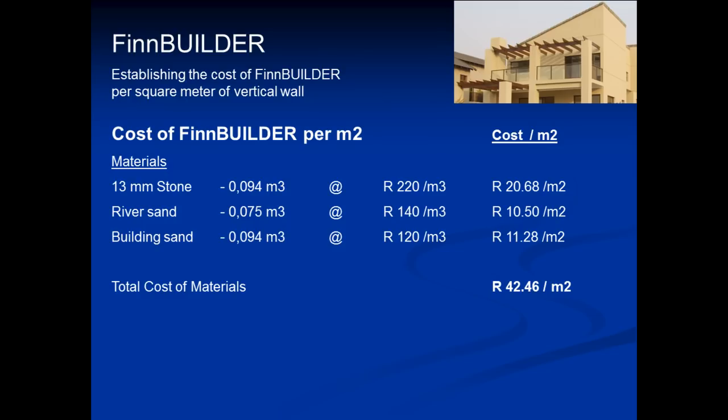Let's now establish the cost of building with FinBuilder in much the same way as we calculated costs using bricks. To build one square meter of vertical wall with FinBuilder we need 0.094 cubes of concrete stone, 0.075 cubes of coarse river sand and 0.094 cubes of fine building sand. Multiply that out at current prices and you arrive at 42 Rand a square meter for materials.